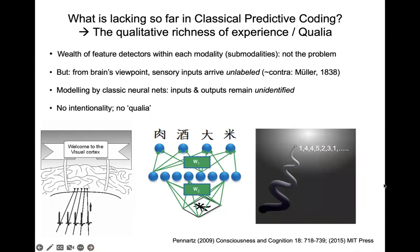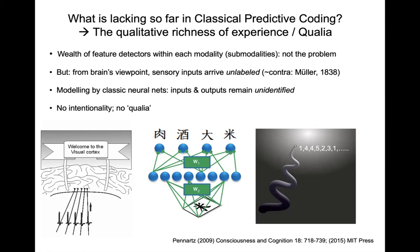Consider a very simple organism like paramecium that has only one light sensor. That light sensor transmits action potentials that drive motor movement phototaxis towards the light source. The point, however, is that this is adaptive behavior sensitive to the stimuli, but from those action potentials alone you cannot derive that it's about light, about photic information, even though the organism is driven towards a light source. With one sensor, you simply cannot have consciousness in the sense of knowing or identifying what your sensory input is about. This intentionality is utterly lacking. So consciousness does not equate with behavioral sensitivity, which is sometimes equated with sentience. Sentience, to me, is a vague concept, and if you translate it as behavioral sensitivity, it's certainly not equal to conscious experience.